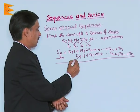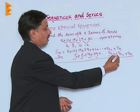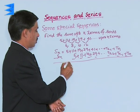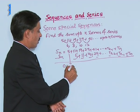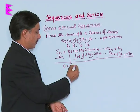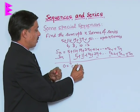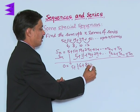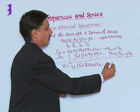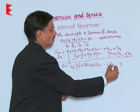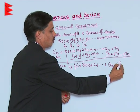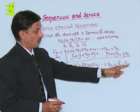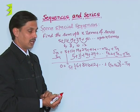Now subtracting in this position, Sn minus Sn = 0 equals first term 5. Then as explained, this difference is 6, this is 8, this is 10, this is 12, and finally T(n) minus T(n-1) — the final term which is not paired with anyone.